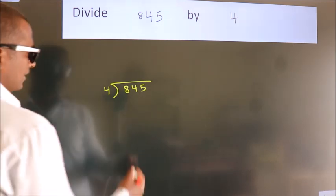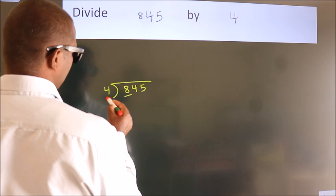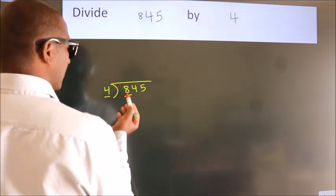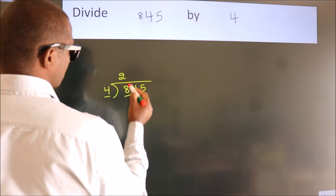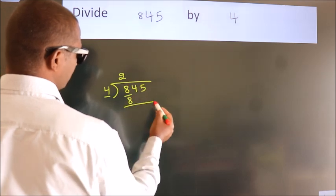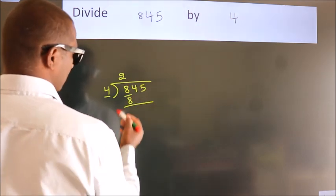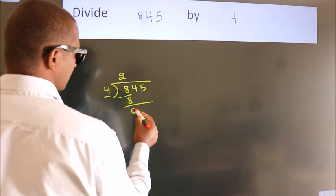Next. Here we have 8. Here 4. When do we get 8? In 4 table. 4 2's 8. Now we should subtract. We get 0.